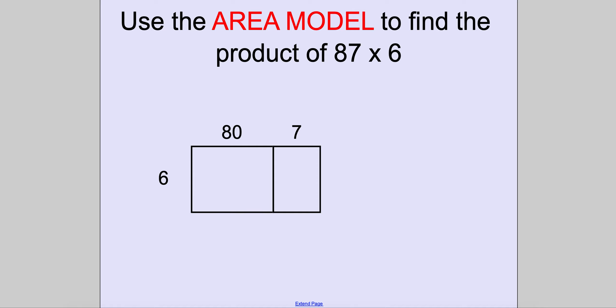Area model of multiplication to find the product of 87 times 6. Basically, the area model is just building a big array for how to do this.